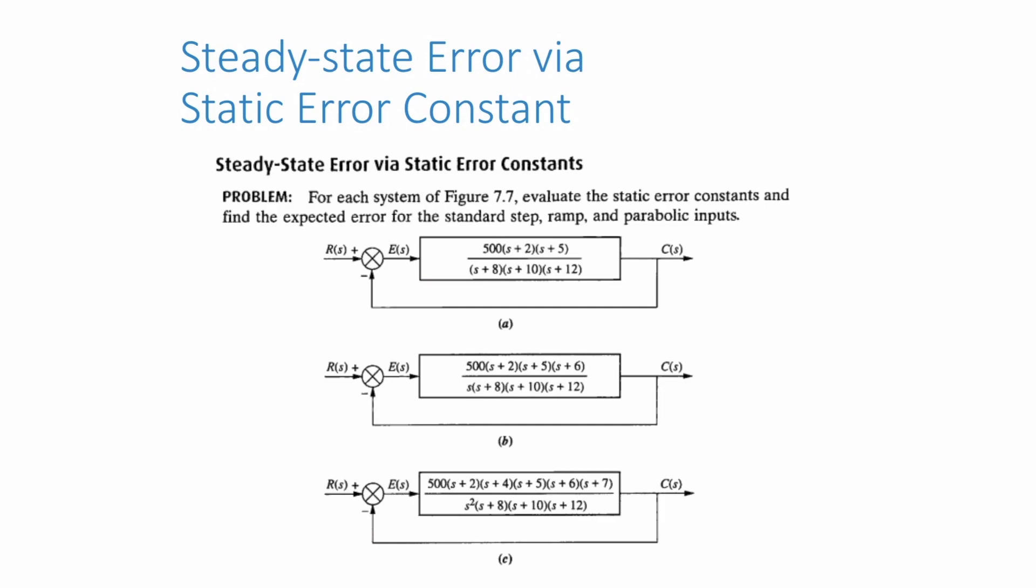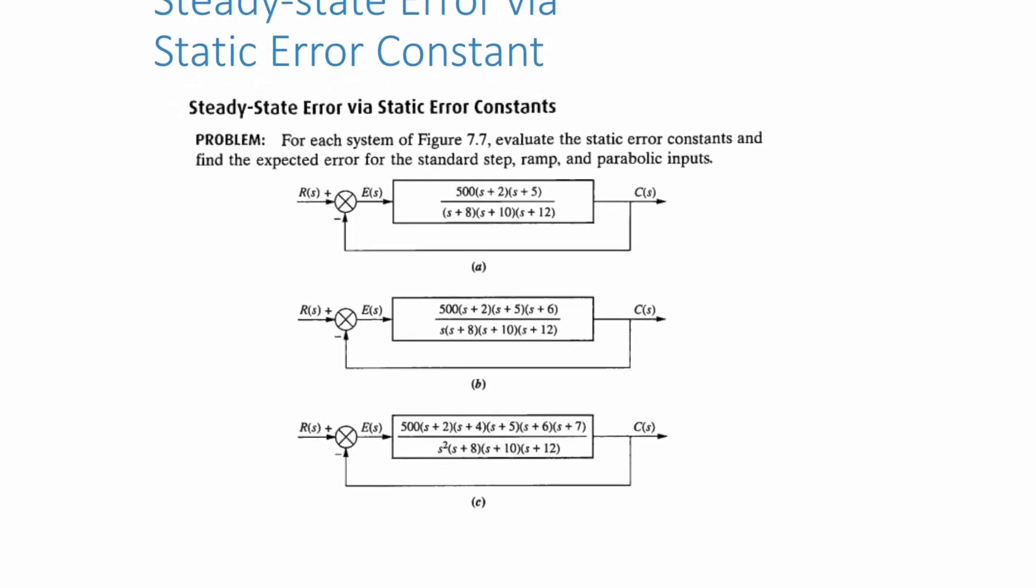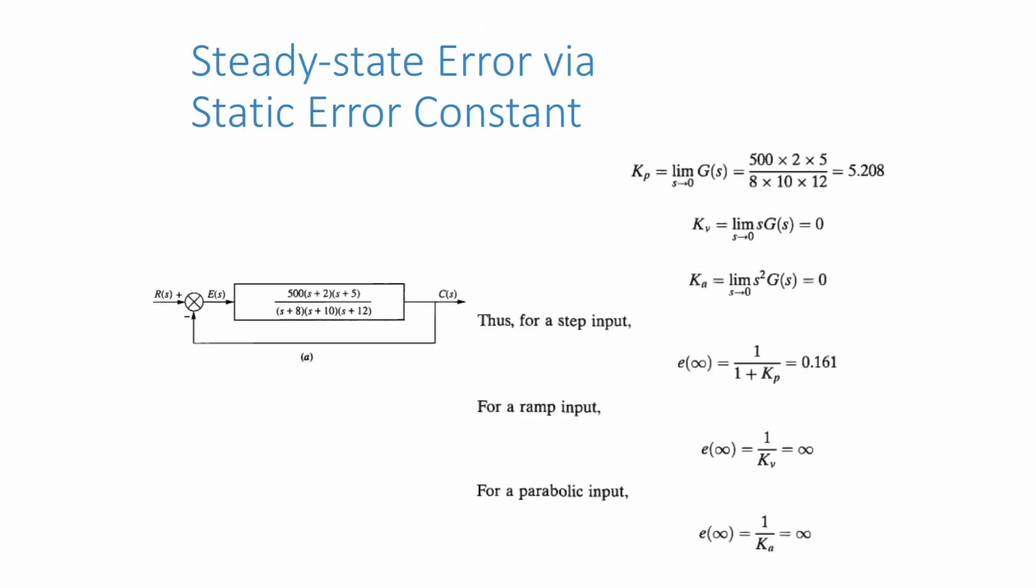Now let us do some examples for the type 0, type 1 and type 2 system. We can find the value of Kp using the limit s approaching zero G(s) and as well as for Kv and Ka.